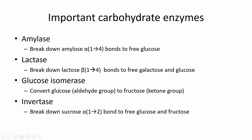Glucose isomerase is very commonly used by the corn processing industry. They take corn, isolate the starch, use amylase to break the starch down into free glucose, then apply glucose isomerase to convert it into fructose. As we just discussed, fructose has higher sweetening capability than glucose gram for gram. This is very popular within the beverage industry — most soda pop and carbonated beverage manufacturers are very heavy users of high fructose corn syrup.